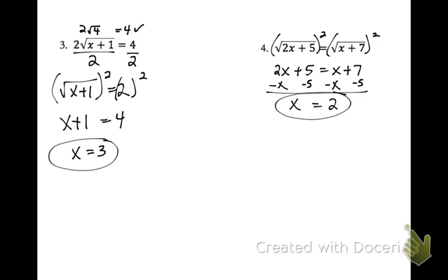Again, I can plug this in. On the left side, I get 2 times 2, which is 4, plus 5, which is 9. And on the right side, I have 2 plus 7, which is 9. So I get square root of 9 on both sides.